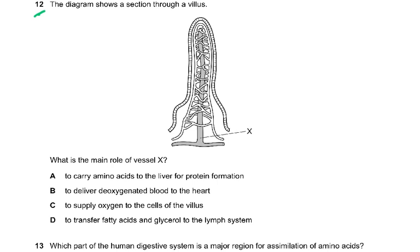Question 12: the diagram shows a section through a villus. Vessel X is a lacteal, and its main role is to carry fatty acids and glycerol — the products of fat digestion — transferring them to the lymphatic system.